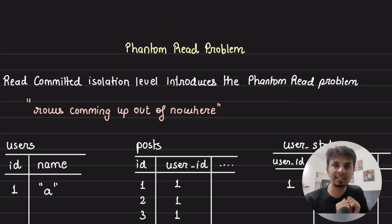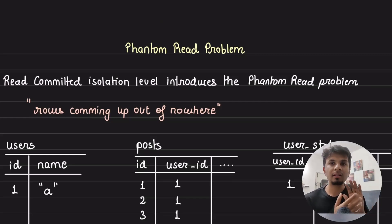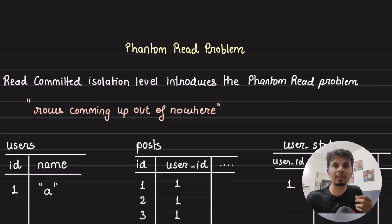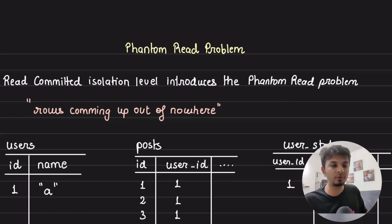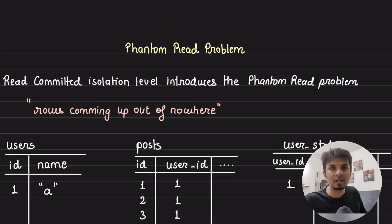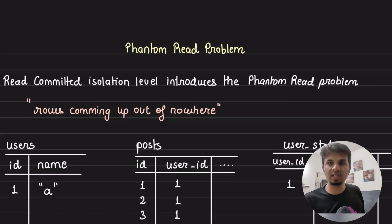We'll take a very practical example to see how it leads to inconsistency, and the way to solve it is to change the isolation level. This problem will occur if you are using a particular transaction isolation level. If you want to protect yourself from this problem, you would have to either change your isolation level or use a different kind of locking mechanism. It is always recommended that if this is something you cannot bear, change the isolation level you are operating on.